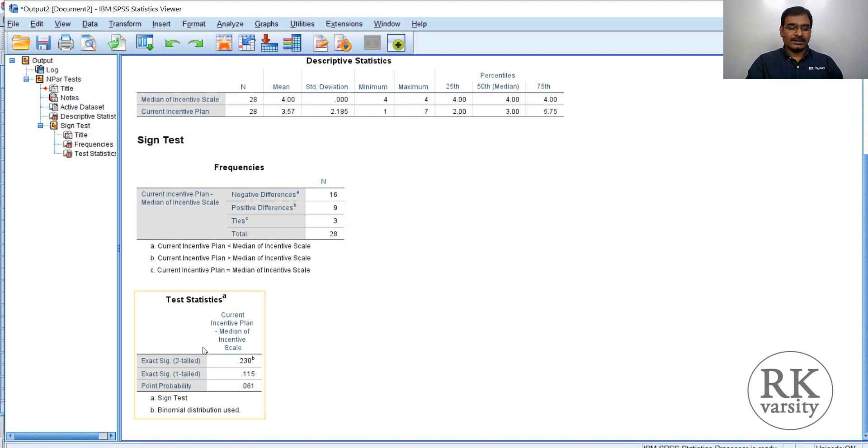Then here your test statistics. Exact Significance Test of 0.230, which indicates that the p-value is greater than 0.05. We fail to reject the null hypothesis. There is no difference in the opinion of employees related to current incentive plan. They are neutral. Neither they are highly dissatisfied nor highly satisfied with the current incentive plan, which indicates that current incentive plan is not acting as a motivator. Even if you look at the exact sign test one-tailed, that is whether the difference is on a positive side or negative side. Here also your significance value is 0.11, which is greater than 0.10 also, at 10% significance level. This also indicates that there is no difference. The current incentive plan is not acting as a motivator.